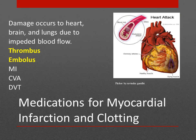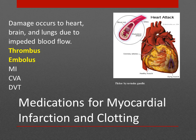When blood flow is impaired, tremendous damage can happen to the body. A thrombus is a clot in a vessel, and an embolism is a clot that breaks loose and travels. A clot can form in the heart and cause a myocardial infarction or heart attack, or travel to the brain and cause a CVA — cerebral vascular accident, or stroke. A thrombus can also form in a vein as a DVT, or deep vein thrombosis. Clots can cause damage wherever they lodge.